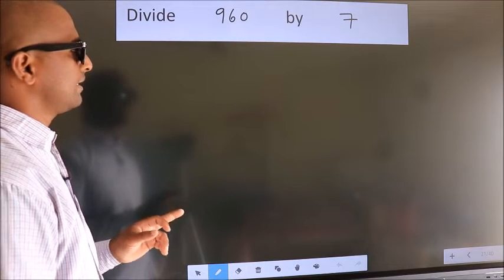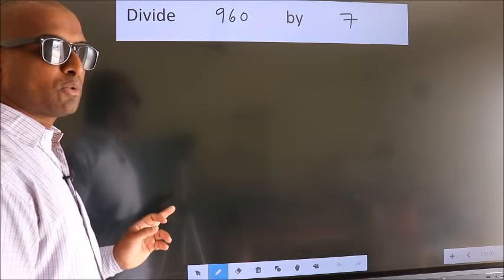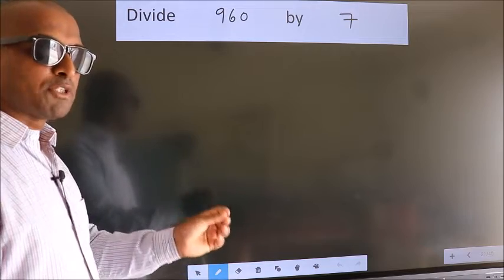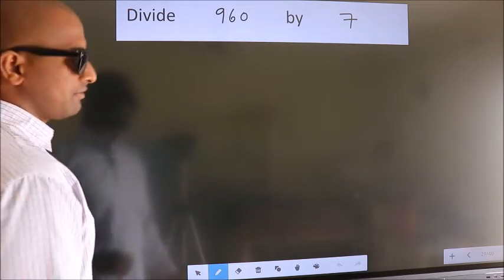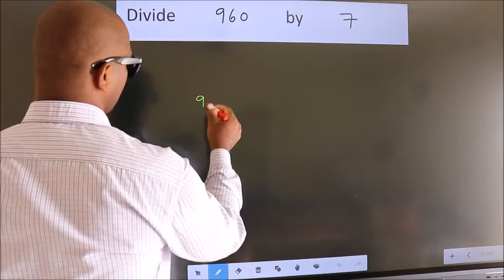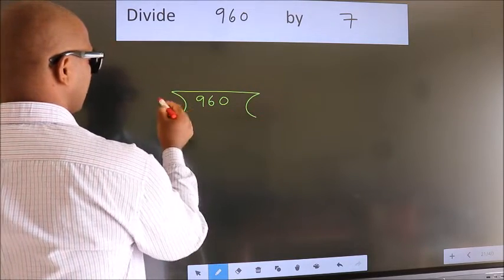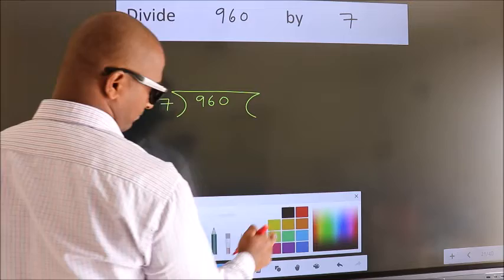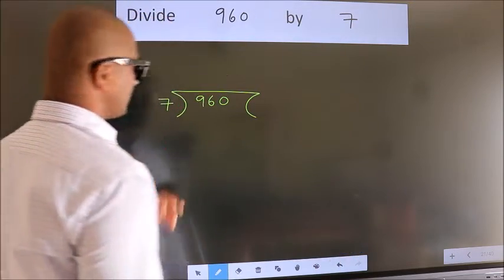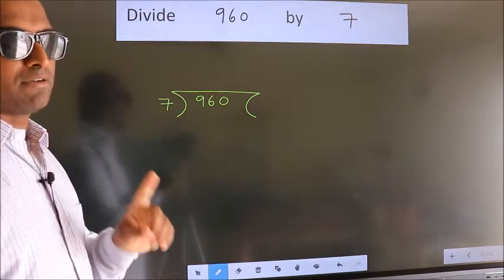Divide 960 by 7. To do this division, we should frame it in this way. 960 here, 7 here. This is your step 1.